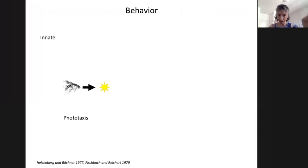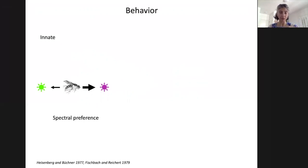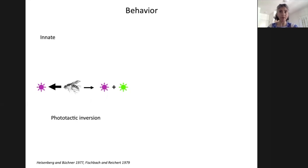On behavior: flies are phototactic — they like light, they like more intense light, and that's true irrespective of wavelength. However, when comparing responses to different wavelengths, a couple of interesting features appear. When given a choice between the same number of photons of UV and green light, flies will always choose the UV — this is called a spectral preference. In addition, when we start mixing wavelengths, another interesting property emerges: a phototactic inversion, where flies choose UV light alone over a mixture of UV plus green light, even though the mixture side is more intense.